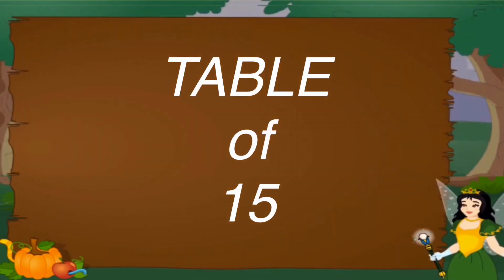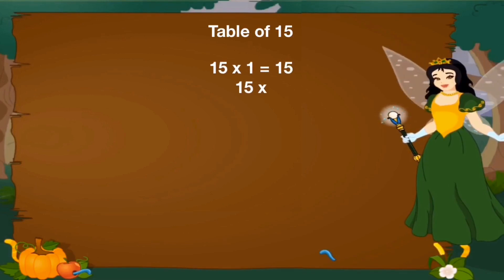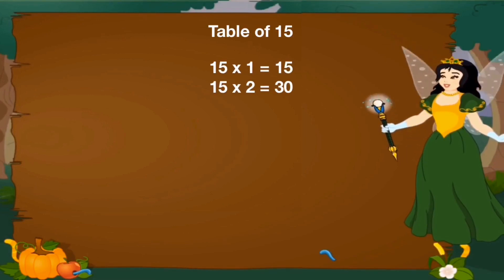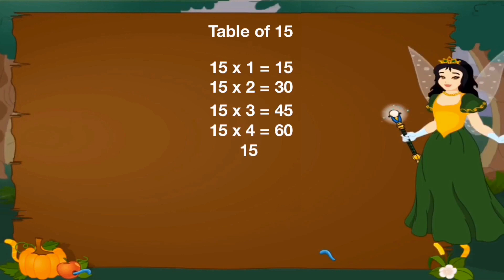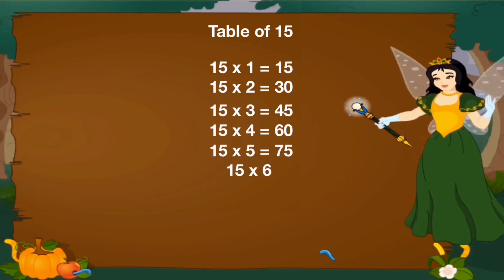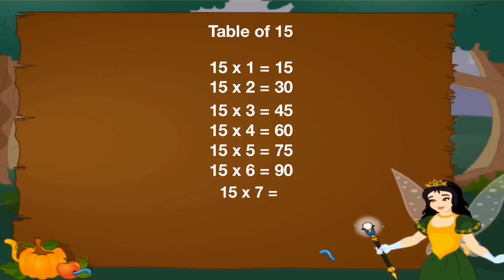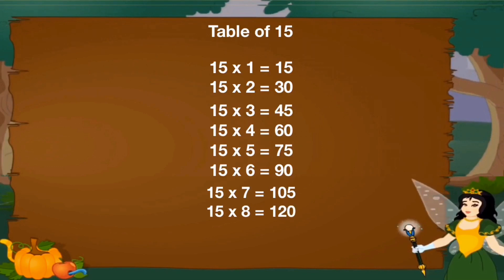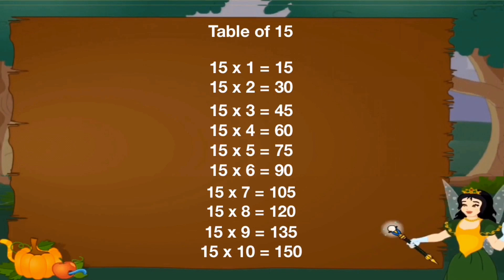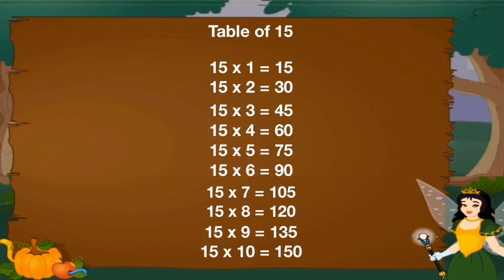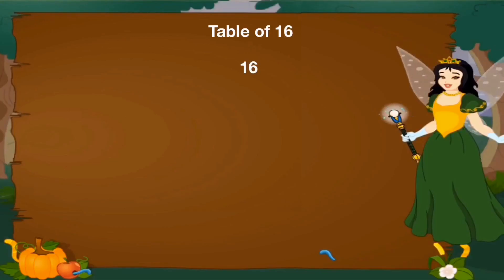Let's revise table of 15. 15 1's are 15, 15 2's are 30, 15 3's are 45, 15 4's are 60, 15 5's are 75, 15 6's are 90, 15 7's are 105, 15 8's are 120, 15 9's are 135, 15 10's are 150.